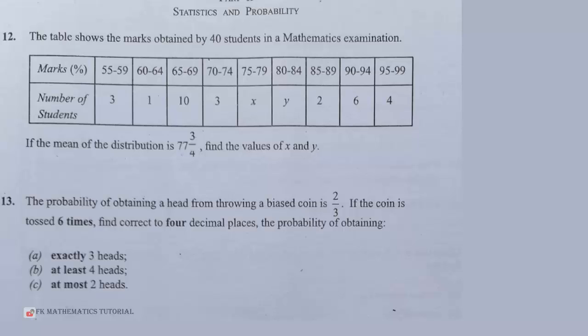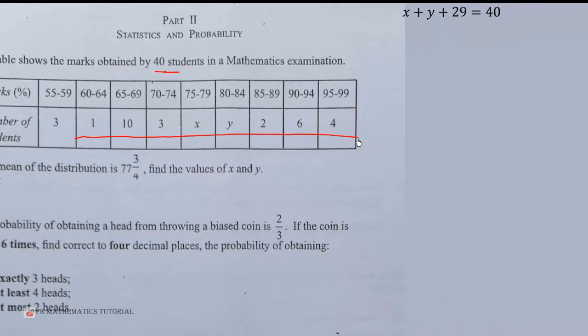We know that the total number of students is 40. That means when we add all of these you're supposed to get 40. So that will give us X plus 29 to be equal to 40.